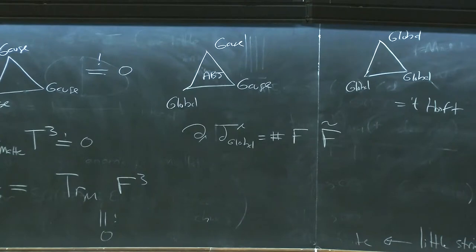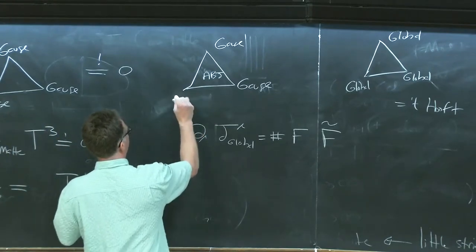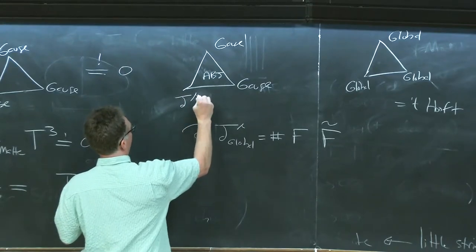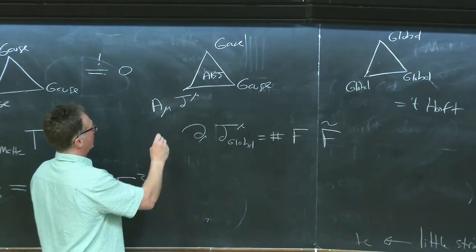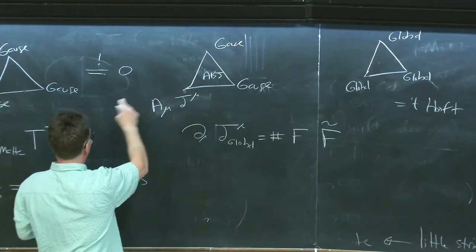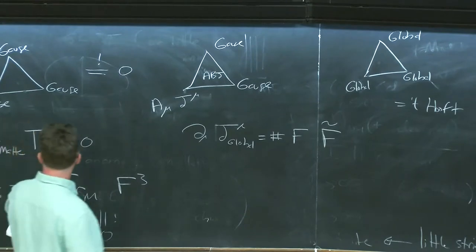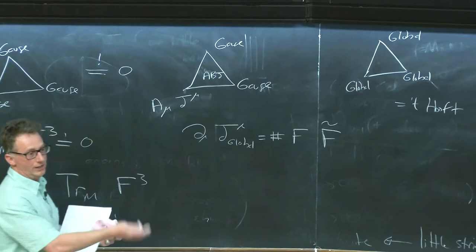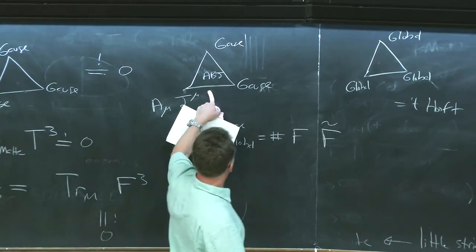All these anomalies can be encoded in the (D+2)-form by coupling global currents to background fields and treating all field strengths — gauge and global — on equal footing. The piece involving only gauge fields must be zero; the pieces involving global symmetries and gravity give the 't Hooft anomalies, which can be nonzero. There are also mixed terms, like one gauge and two global symmetries, which were the subject of a recent paper I wrote with Cordova and Dimofte.